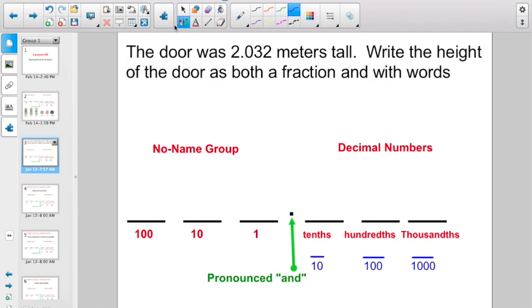So, let's jump right into it right now. Here it is saying, the door was 2.032 meters tall. Write the height of the door as both a fraction and with words. Let's use our handy-dandy place value decimal chart here, and let's see what we're up against. We have 2, and then a decimal point, and then a 0, and a 3, and then a 2, right?